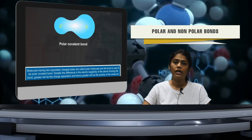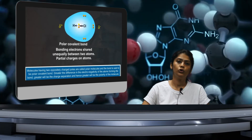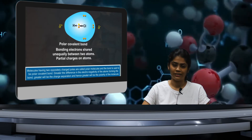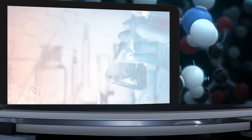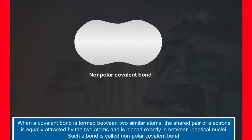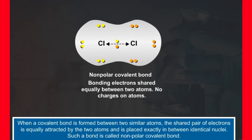Now let's look at polar and non-polar bonds — how they are different and what makes each of them unique. When a covalent bond is formed between two similar atoms, the shared pair of electrons is equally attracted by the two atoms and is placed exactly in between identical nuclei. Such a bond is called a non-polar covalent bond.